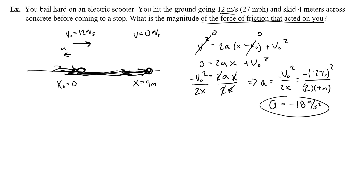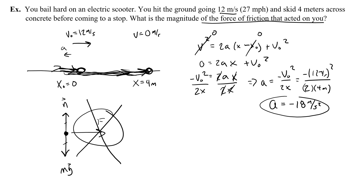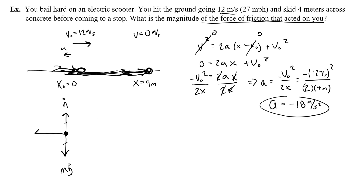Now, thinking about the free body diagram as you slide: weight acts down, normal force acts up — those are balanced and not part of the net force. There is no forward-pushing force; your inertia carries you forward at 12 m/s. If you fell on ice, you'd keep going indefinitely. What stops you is friction, which drags back against you. Friction is therefore the only unbalanced force, and the net force equals friction in this problem.